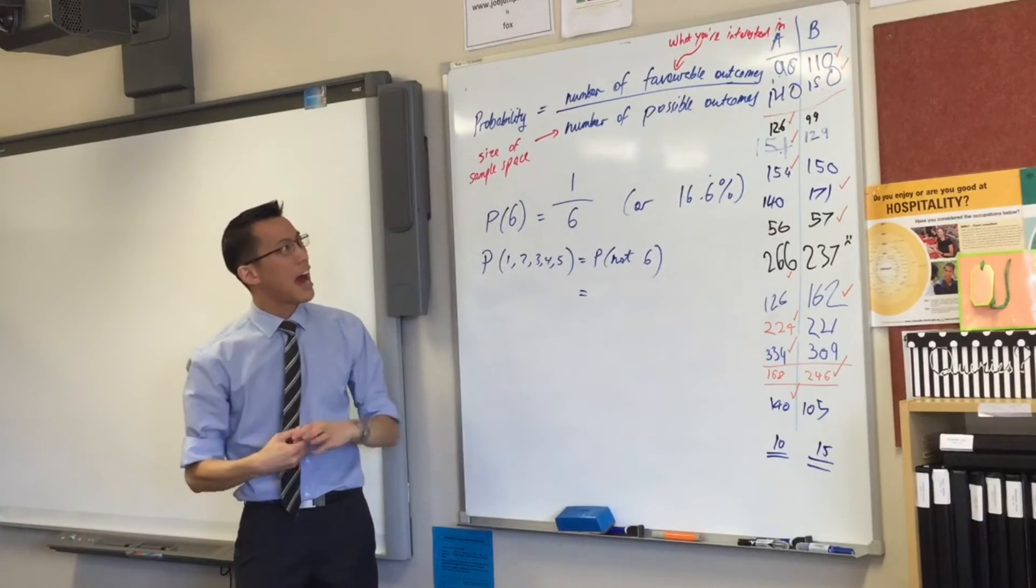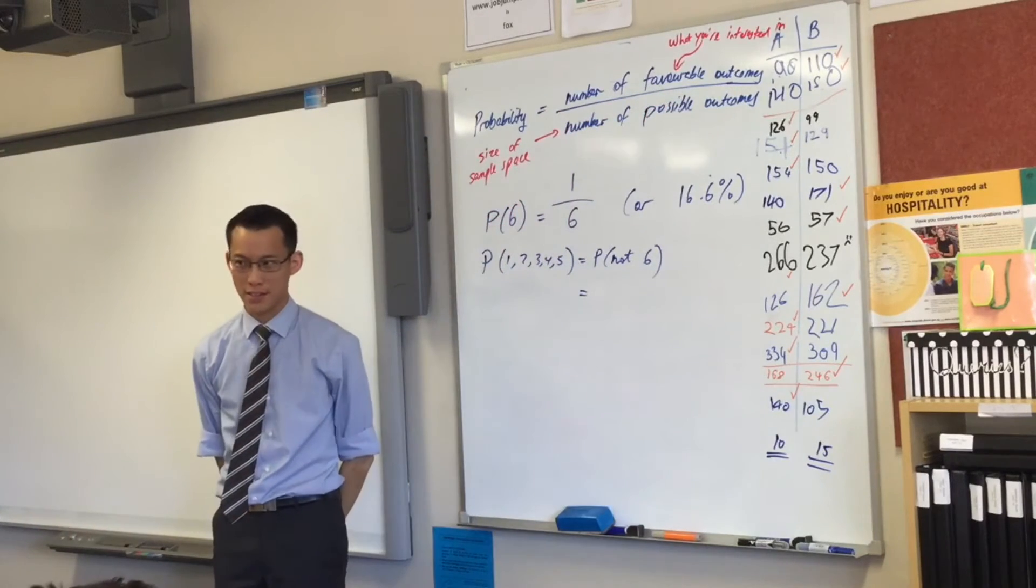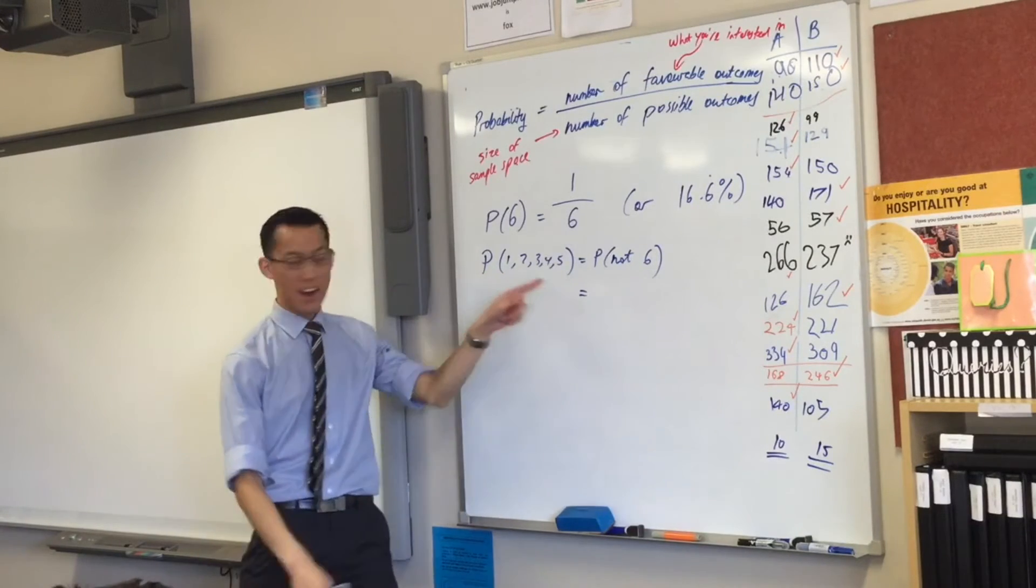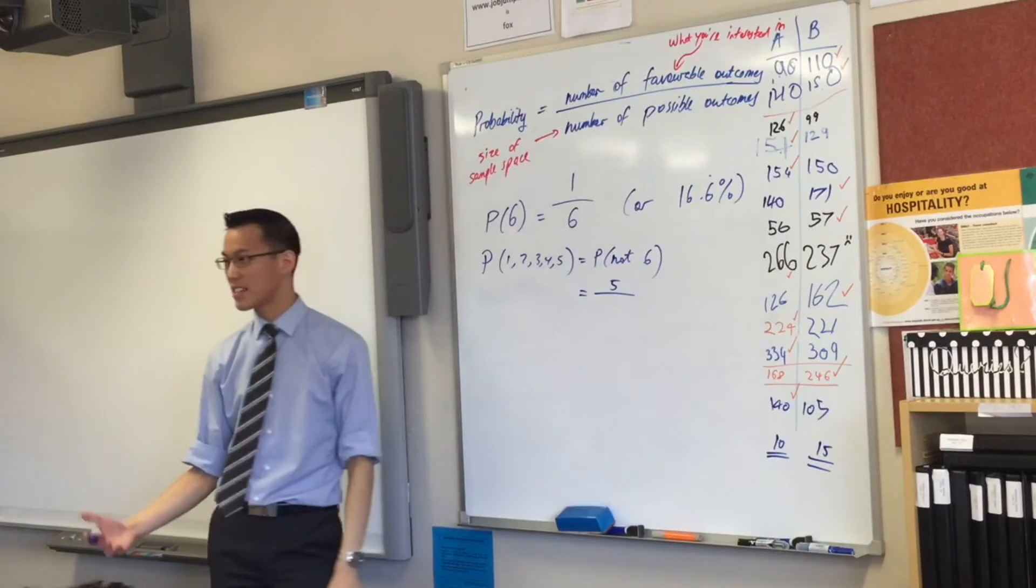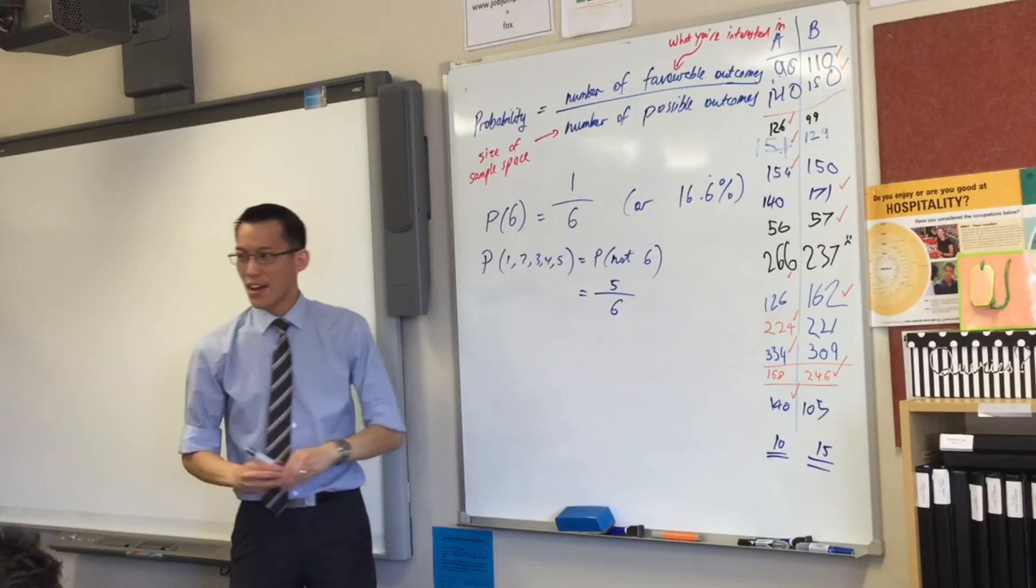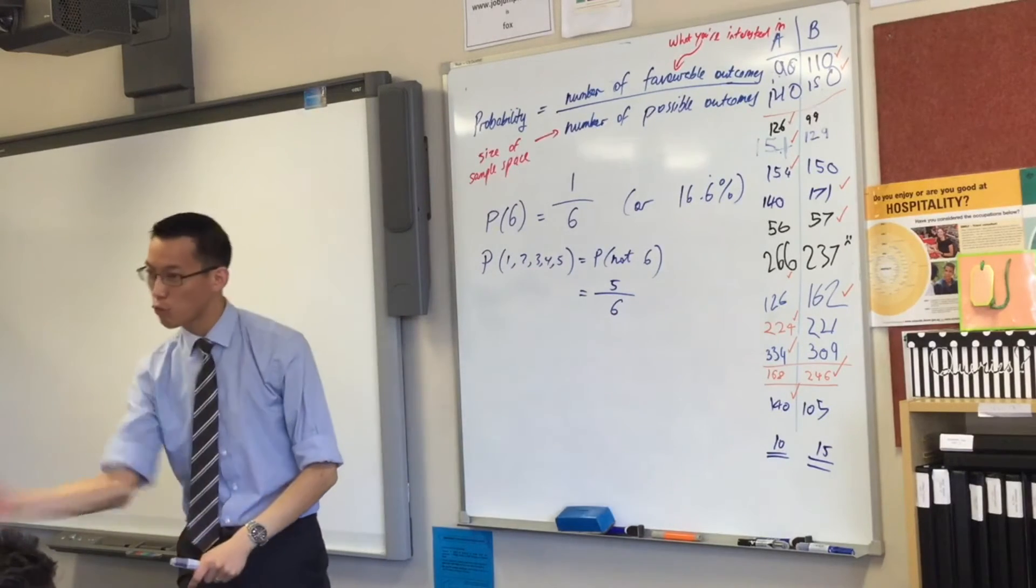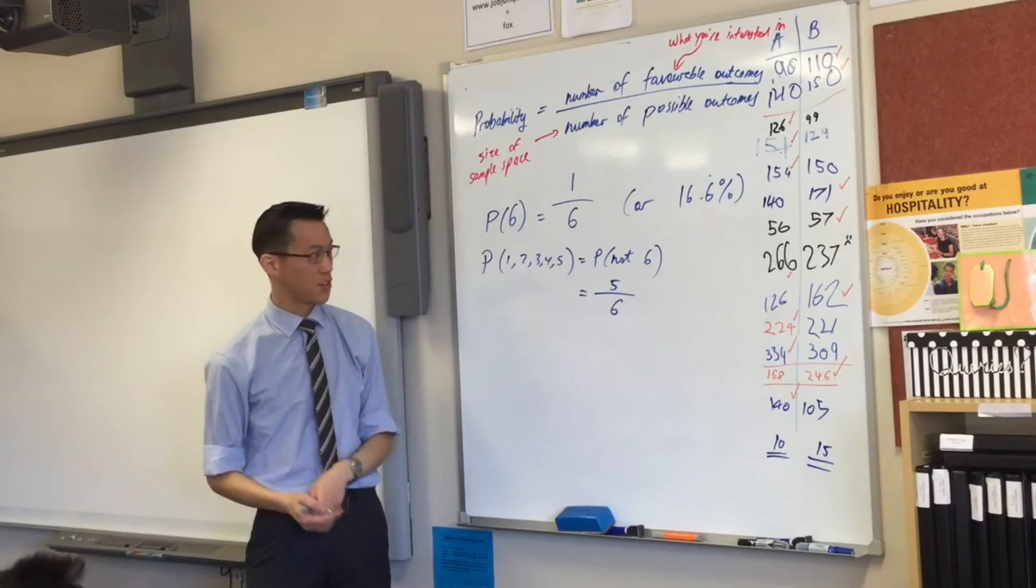Now, again, I'm going to ask the question. How many outcomes are not 6 on the faces of the die? 5. There they are. 1, 2, 3, 4, and 5. What about the size of the sample space? 6. It's still 6. It hasn't changed, right? So, 5 sixths. Yeah. So, 5 sixths is the chance on any given roll that player B is going to actually get points on that. Okay?